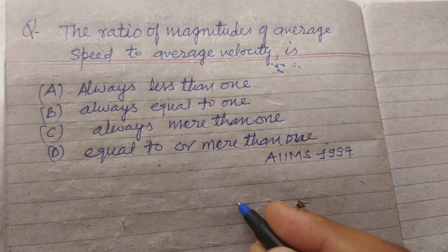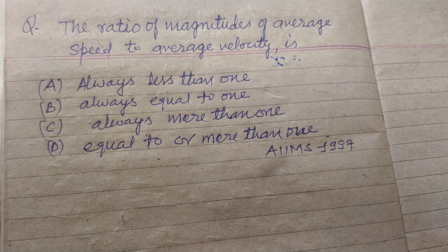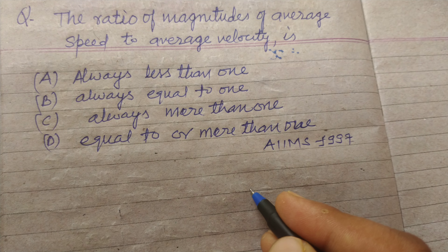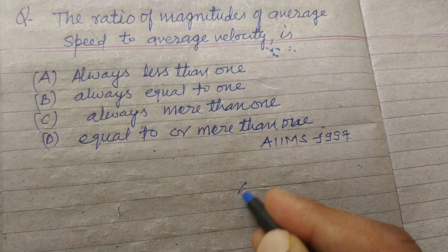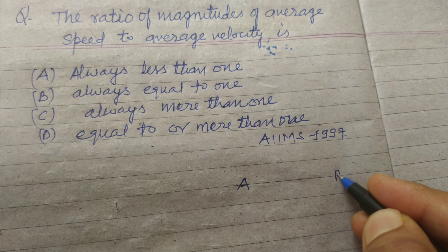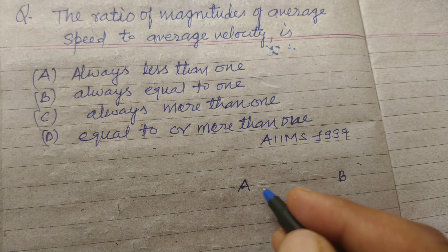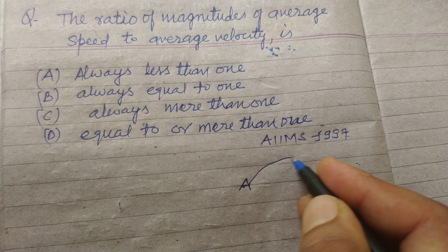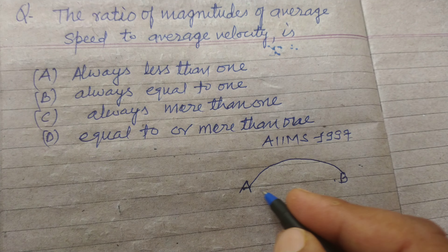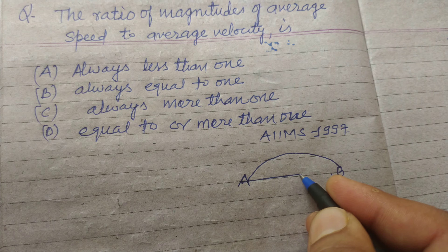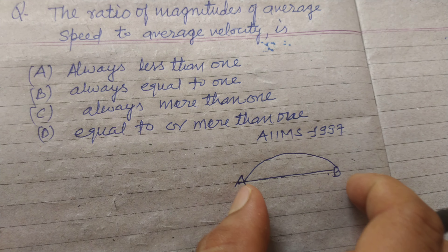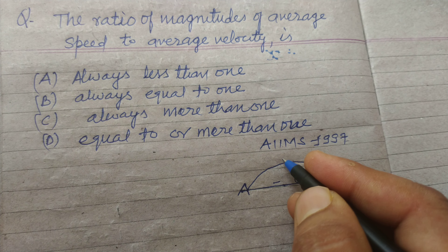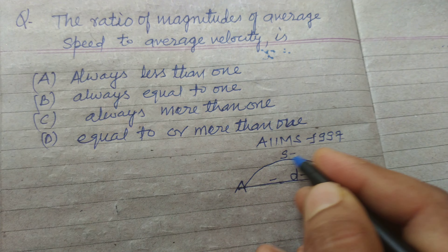You should know the two quantities: distance and displacement. Let two points A and B have positions. The distance between these two points is S, and displacement is the perpendicular distance — or the shortest distance between two points — and is called displacement, while the other path distance is called distance.